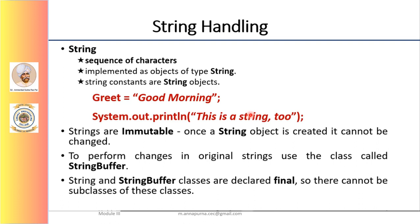The difference is that each time we need an altered version of an existing string, a new string object will be created that contains all the modifications, while the original string is left unchanged. This approach is used because fixed immutable strings can be implemented more efficiently than changeable ones. For cases where a modifiable string is desired, Java provides two options: StringBuffer and StringBuilder. Both hold strings that can be modified after they are created. The String, StringBuilder, and StringBuffer classes are defined in java.lang, available to all programs automatically, and declared as final, meaning none of these classes may be subclassed.